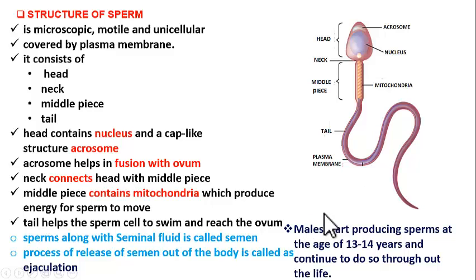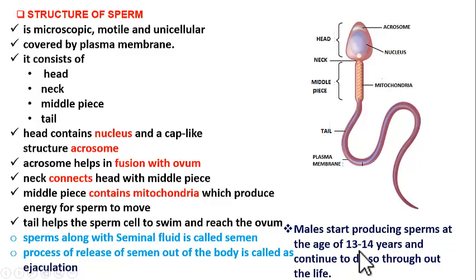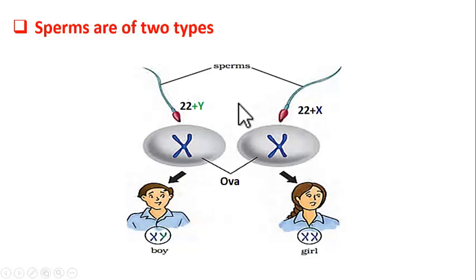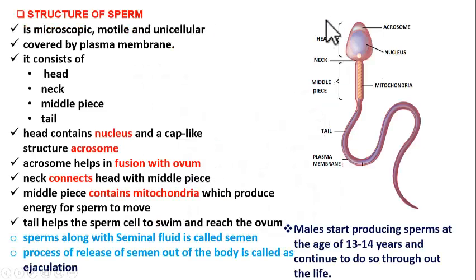One more important point: males start producing sperms from the age of 13 to 14 years. Sperms are produced only from the age of 13 to 14 years. Before puberty age, they don't produce sperms. Only after 13 to 14 years they start producing sperms. And how long do they produce sperms? Throughout their life. However, with advancing age, the ability to produce sperms decreases. This is about the structure of sperm, and I also explained sex determination depending upon the type of sperms. In my next video, I am going to cover the female reproductive system. Thank you.